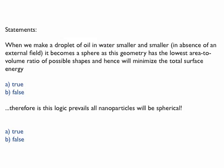Okay. Now some voting here. There's two statements. Let's do the first one. When we make a droplet of oil in water smaller and smaller, in the absence of an external field - I'm not shaking or anything - it becomes a sphere, as this geometry has the lowest area to volume ratio of possible shapes.